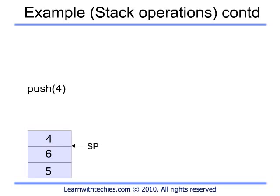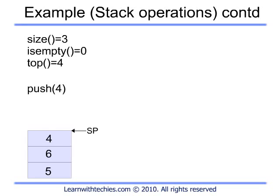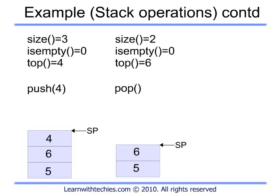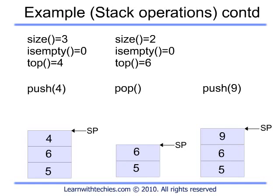A push is performed with element 4. You can see how the stack changes and SP now points one level above the current level. Then a pop is performed — it removes the topmost element and moves SP one level below. You can see the values that size, isEmpty, and top will return. Then a push of 9 is performed, and the stack grows from the last position with SP pointing one level above.